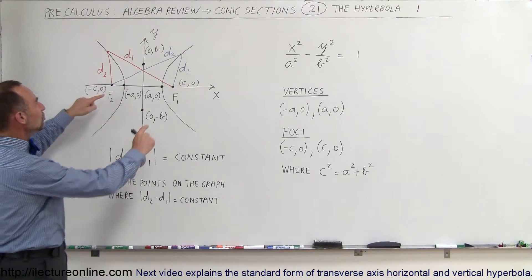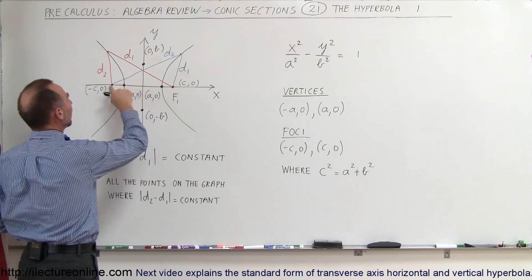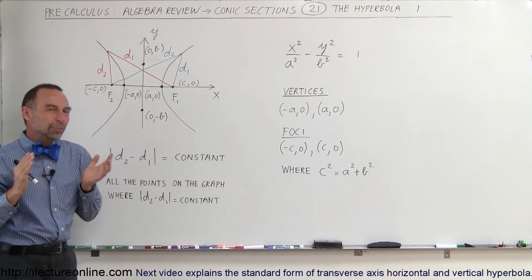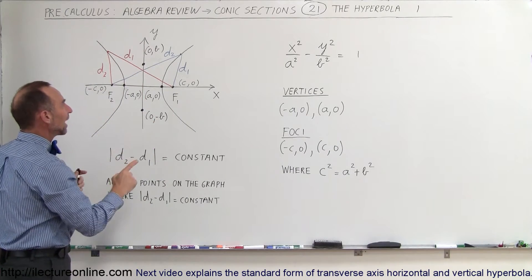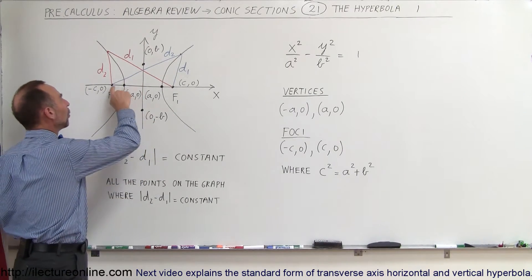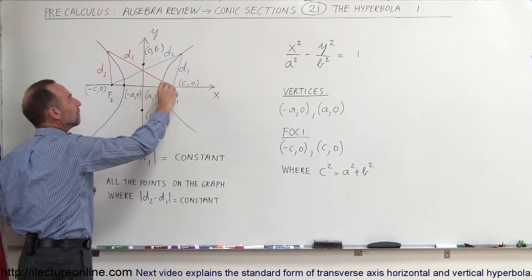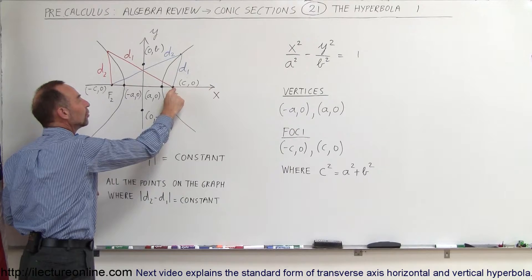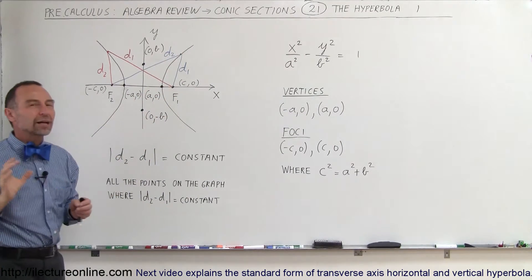Let's say we have two points on the x-axis, let's call those the foci. So here we have focus 1 and focus 2. We can define a hyperbola by picking all the points on the xy-plane such that the distance from one focus to the graph minus the distance from the other focus to that same point on the graph, that distance will always remain a constant.